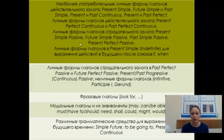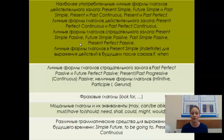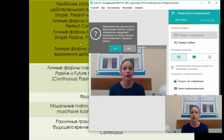Фразовые глаголы — например, look for, и их намного больше, вы должны знать их перевод и уметь ими пользоваться. Модальные глаголы и их эквиваленты: may, can, be able to, must, have to, should, need, shall, could, might, would. Различные грамматические средства для выражения будущего времени: Future Simple, to be going to, Present Continuous и другие. Как вы видите, объём проверки грамматических навыков достаточно большой, и без специальной подготовки вам не удастся успешно пройти этот тест.